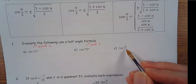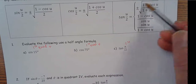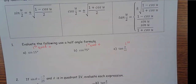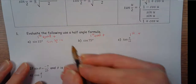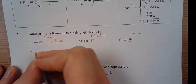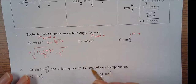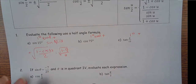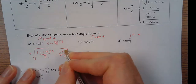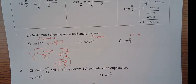Pi over 12 is also in the first quadrant — it's 15 degrees (180 divided by 12). So I'm going to use the positive root on all of these. Think of sine 15 as sine(30/2), so u = 30. Plugging in: positive square root of (1 minus cosine 30) divided by 2. Cosine 30 is √3/2, so it's √((1 − √3/2) / 2). Multiplying through by 2 gives √((2 − √3) / 4). It looks weird to have a radical under a radical, but that is acceptable.